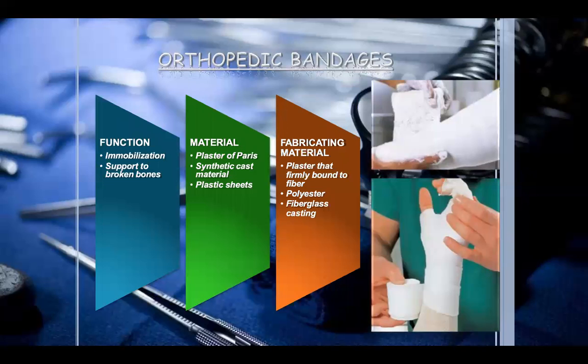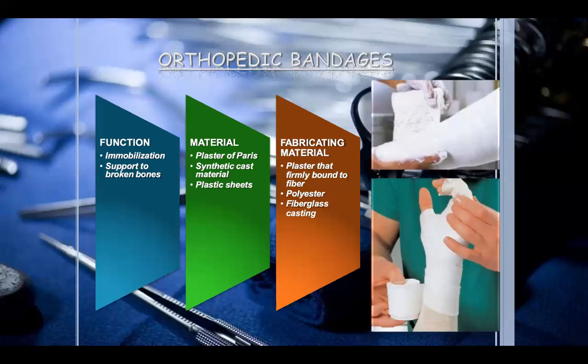The orthopedic bandage functions to provide immobilization and support to broken bones. Materials used include plaster of Paris, synthetic cast materials, and plastic sheets. The fabricating material is a plaster firmly bound to fiber — such as polyester or fiberglass. Nowadays, various types of orthopedic bandages are available to ease the patient and fix the fracture accordingly.